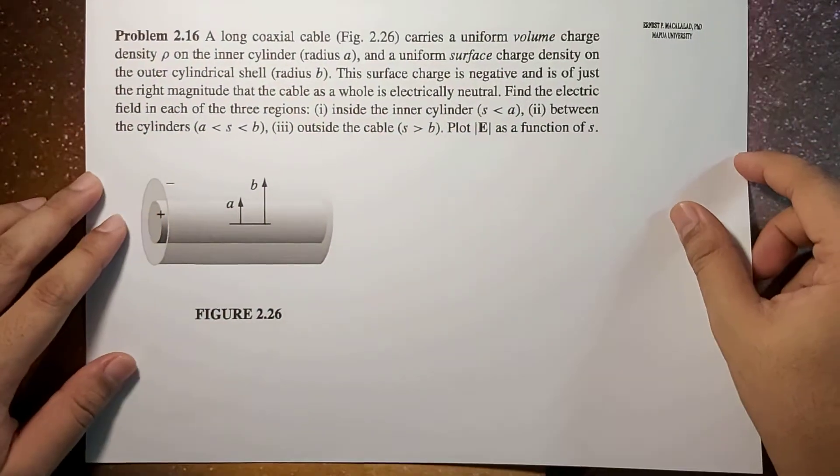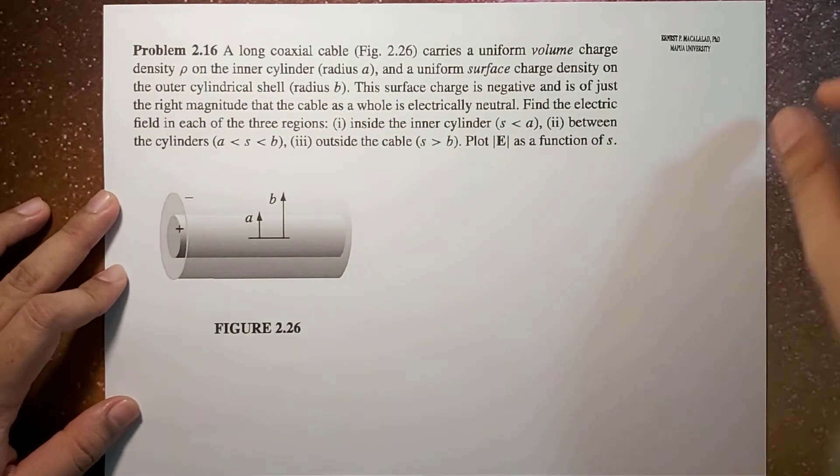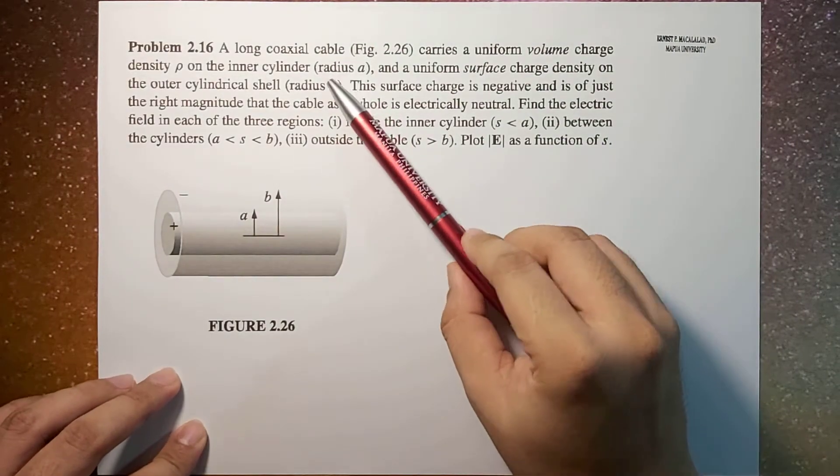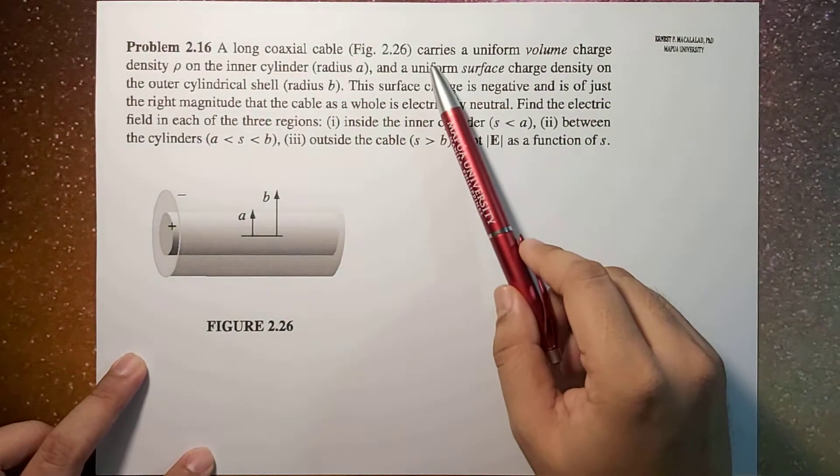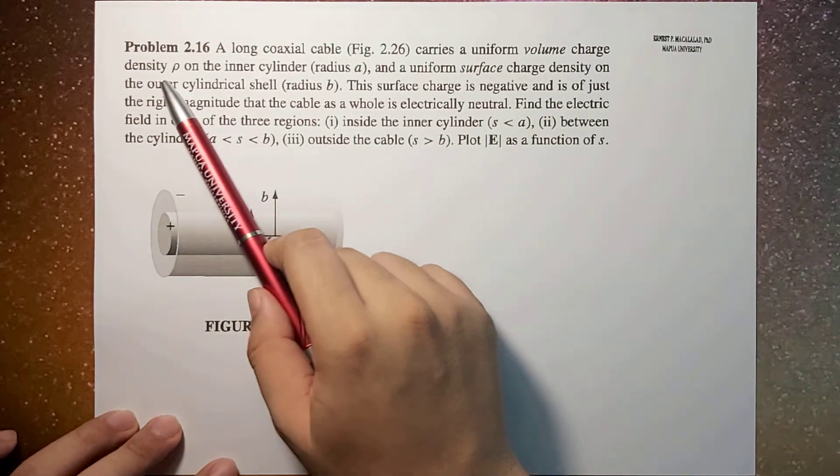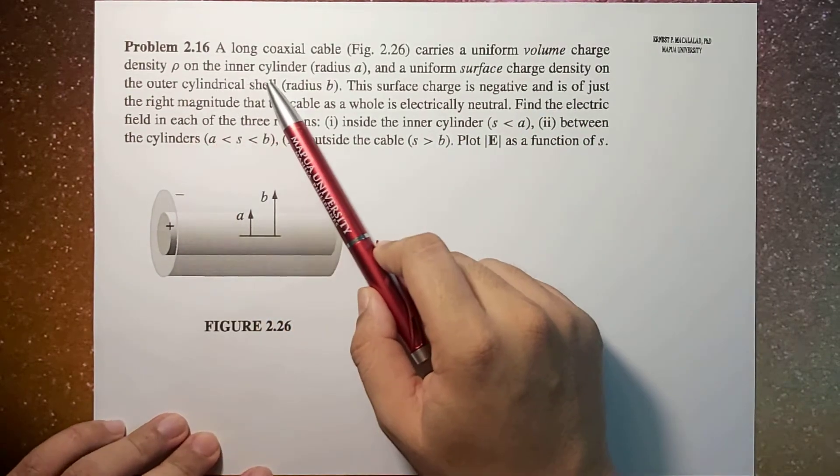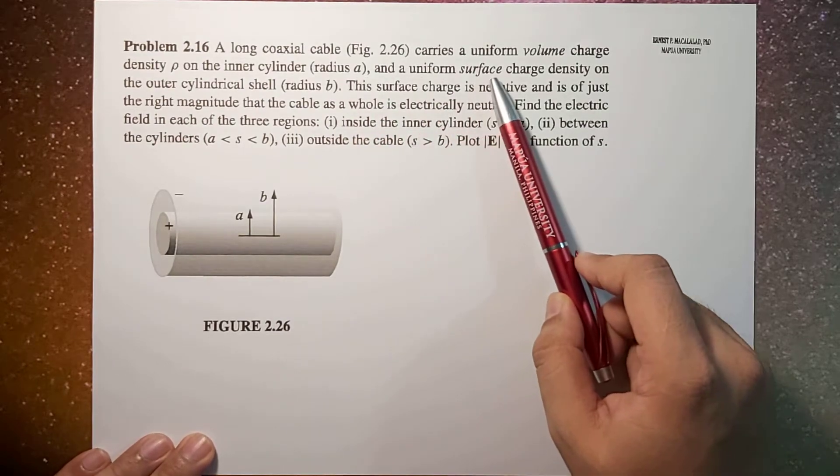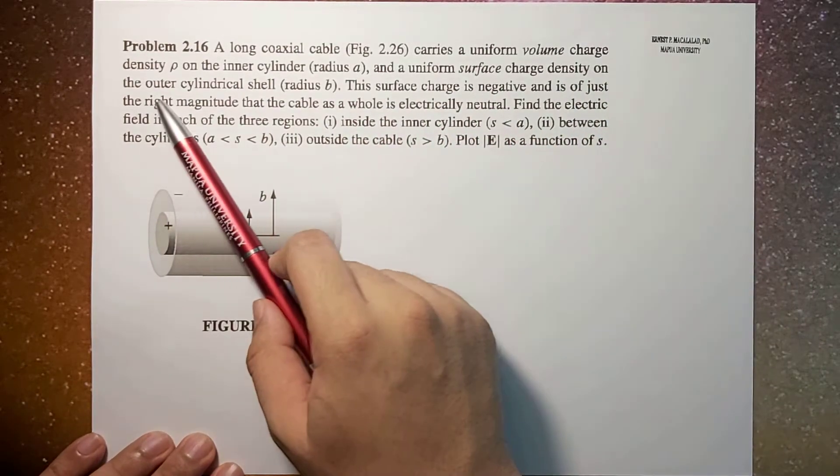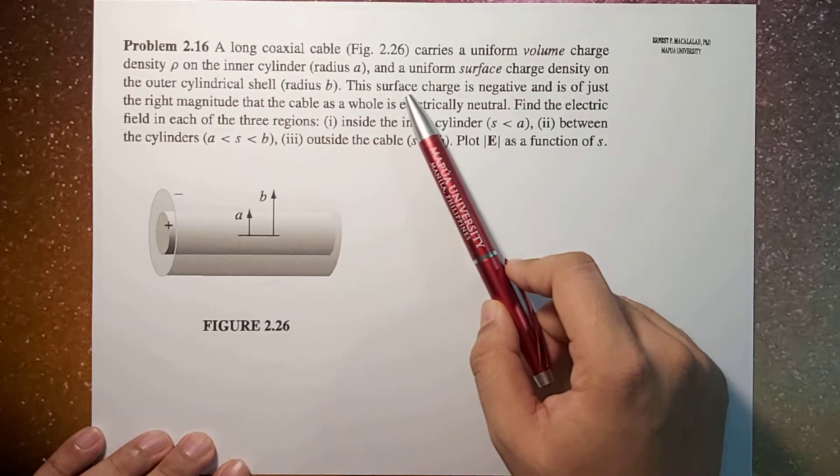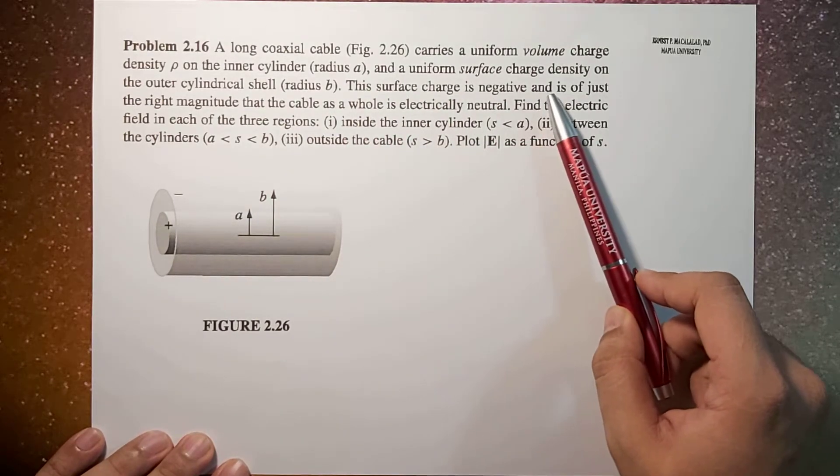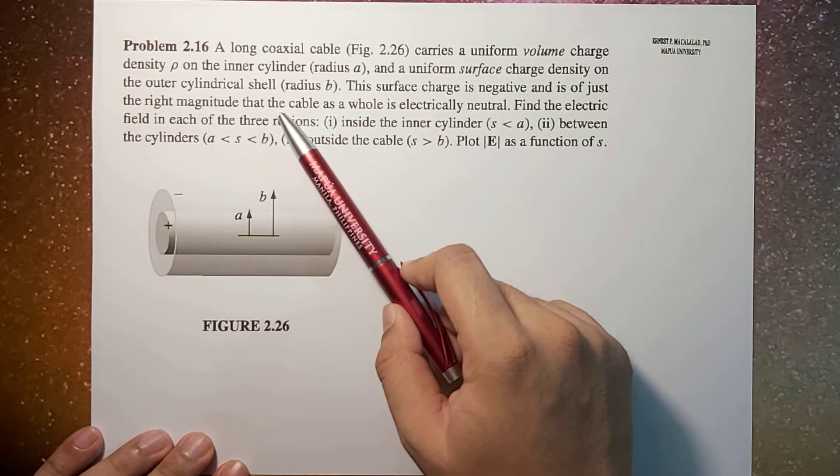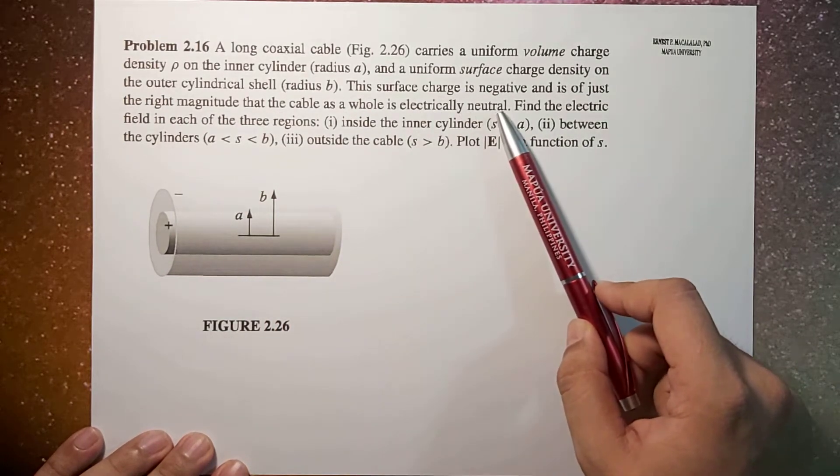The problem reads: A long coaxial cable, as in figure 2.26, carries a uniform volume charge density ρ in the inner cylinder of radius A, and a uniform surface charge density on the outer cylindrical shell of radius B. This surface charge is negative and is of just the right magnitude that the cable as a whole is electrically neutral.